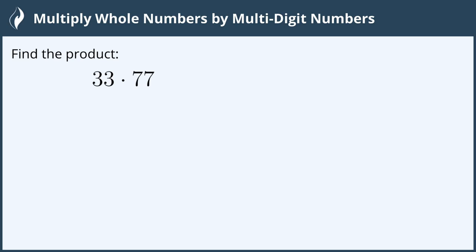Hi everyone! In this video we're going to multiply whole numbers by a multi-digit number. Find the product 33 times 77.